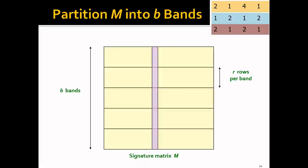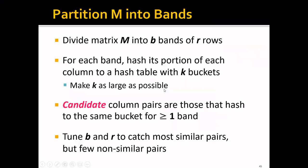In practice, we often partition the signature matrix M into B bands, and each band will have R rows. We treat each band of one column as a signature and use a hash function to hash it into some bucket. For each band, we hash its portion of each column to a hash table with K buckets — you want to make K as large as possible to avoid collisions. Candidate column pairs are those hashed to the same bucket for at least one band. We can tune B and R as hyperparameters to catch most similar pairs but few non-similar pairs, balancing false positives and false negatives.